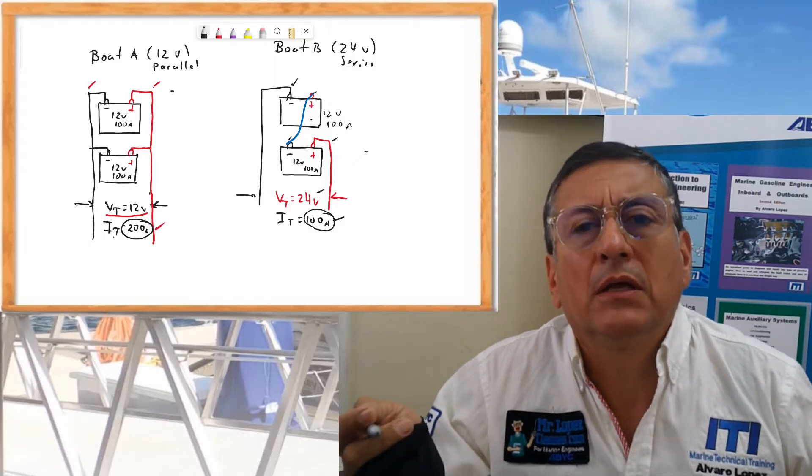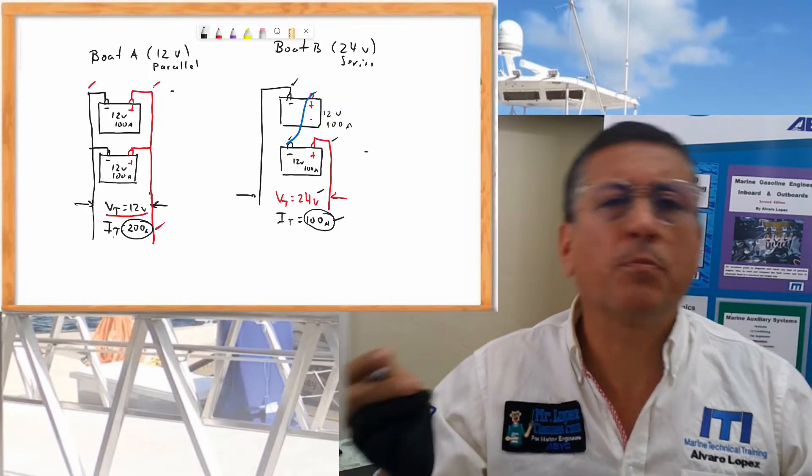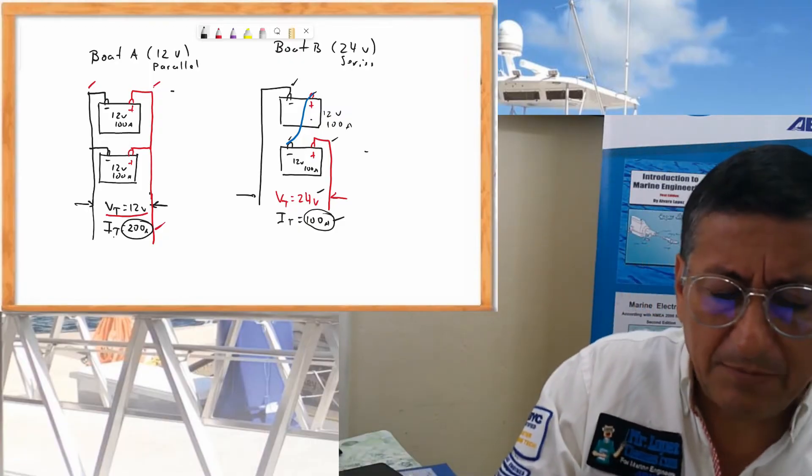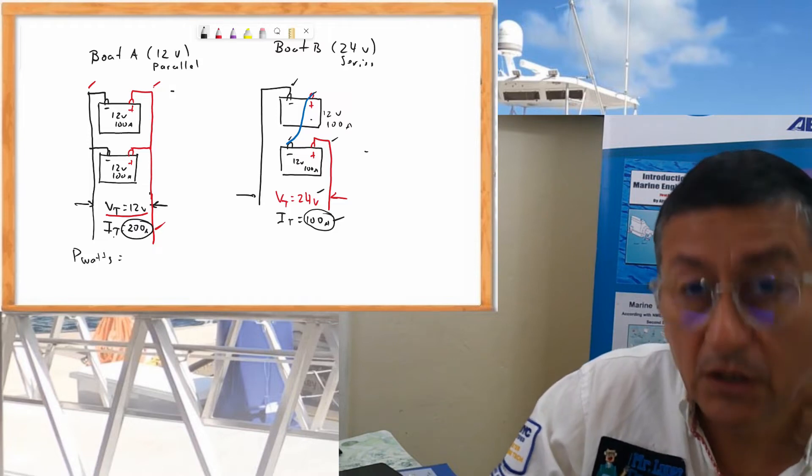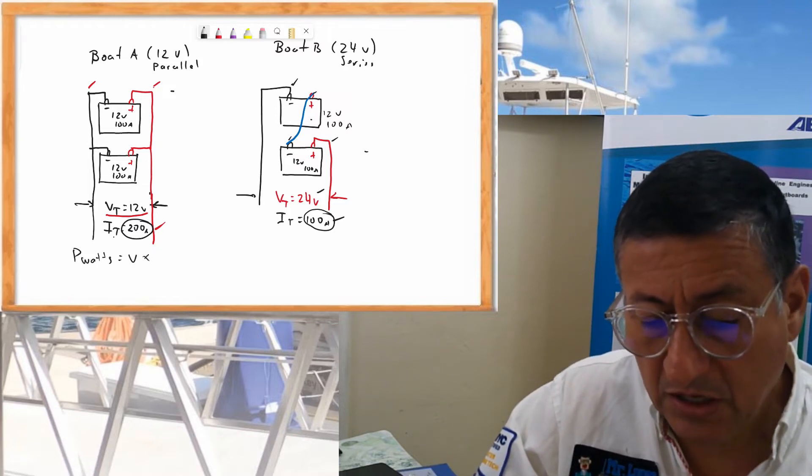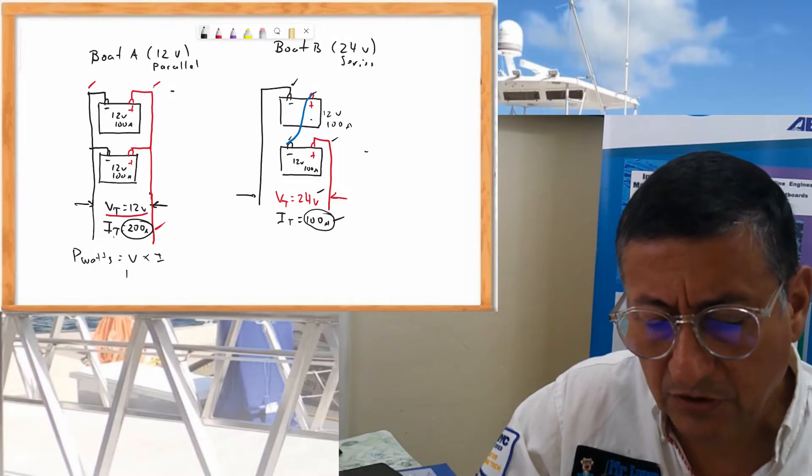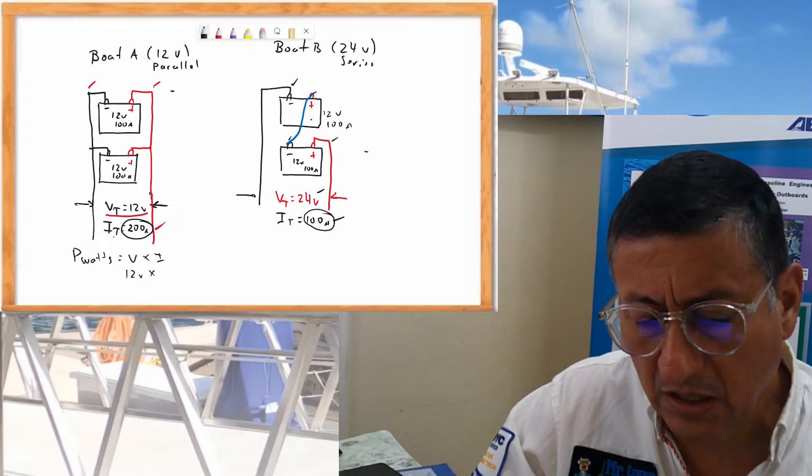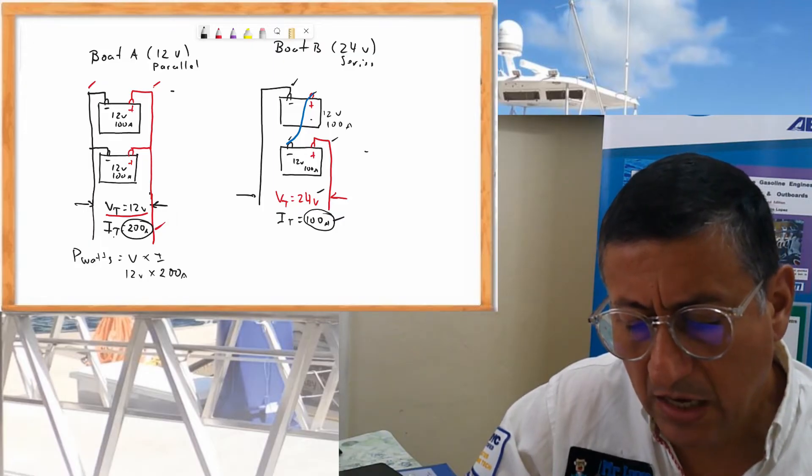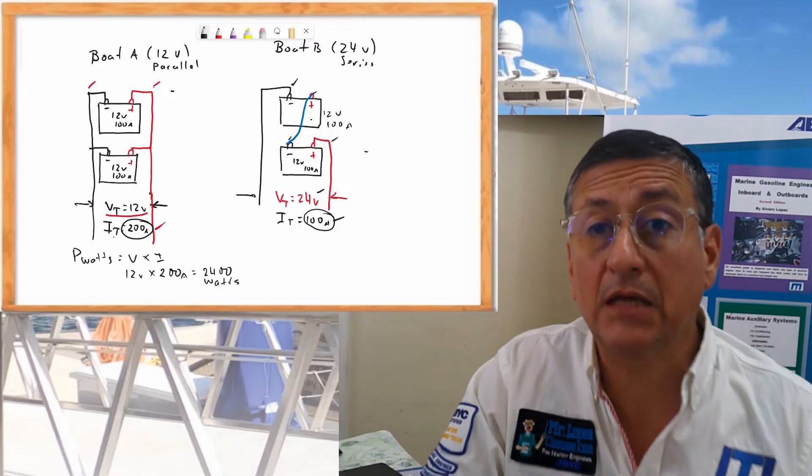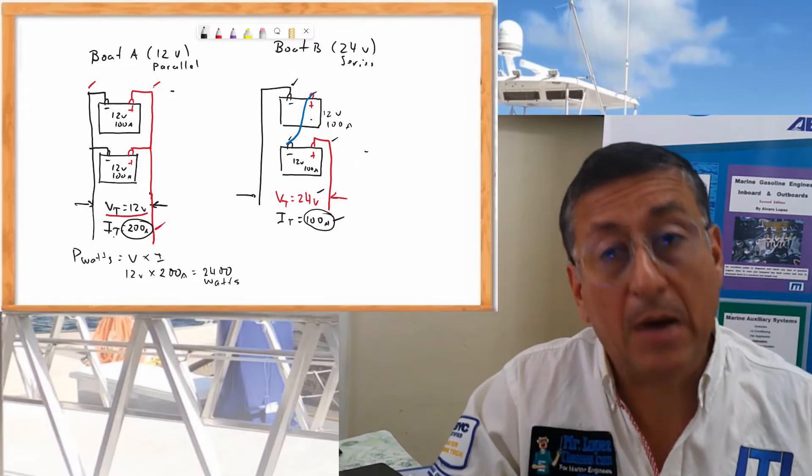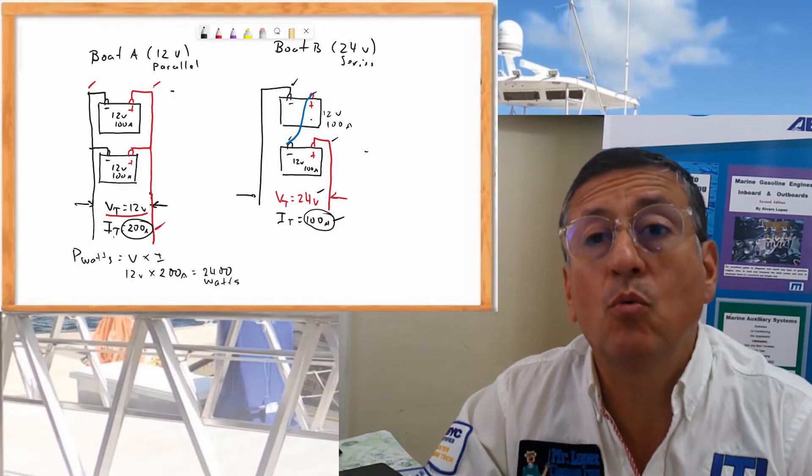Now we are going to check the power. Is more power in 24V or is more power in 12V or what happened? Let me check the formula. The formula for power states that the power in watts is equal to the voltage times intensity. In this particular case the voltage is 12V times the intensity is 200 amps. Is 2400 watts. This is the power, the electrical power. When you connect two batteries in parallel, in this particular example, each battery is 12V, 100 amps.